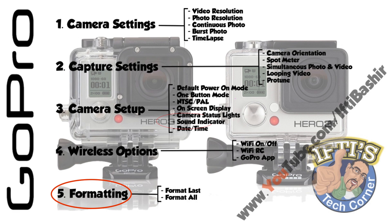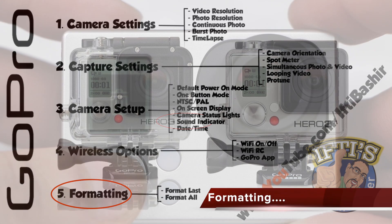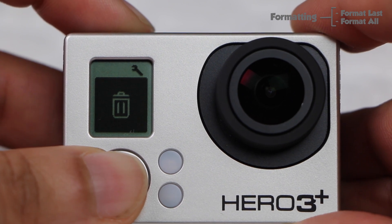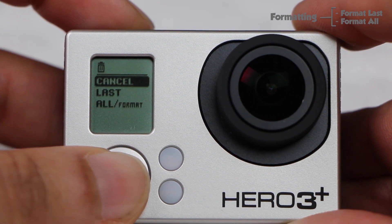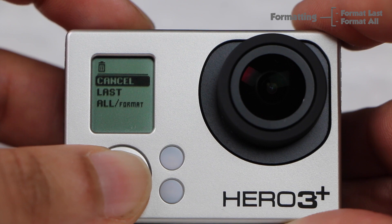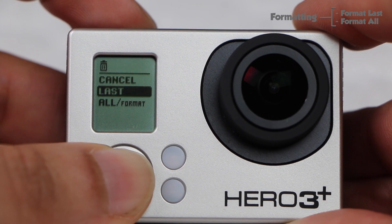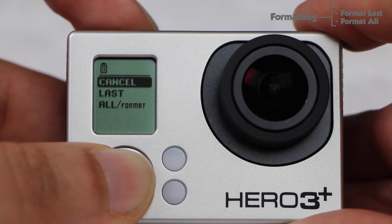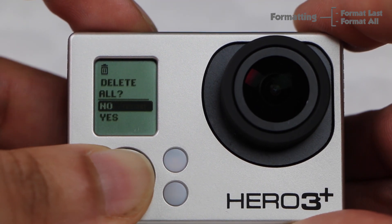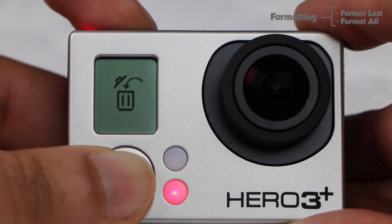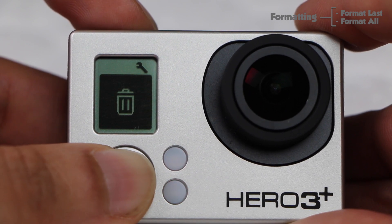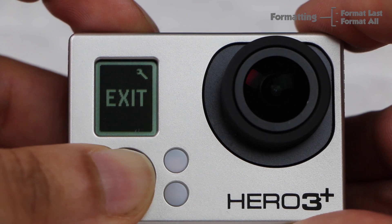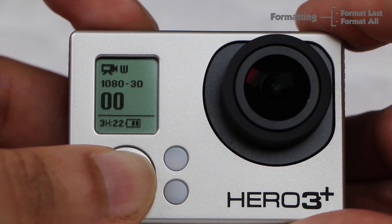The very last camera option we have is formatting. This setting allows you to format your memory card — bear in mind this will delete anything currently stored on the card. But it's a good idea to format your memory card before you start shooting video in order to minimise any memory card related errors. As a general rule, when you insert a new card for the first time, or once you've transferred the video from your card into your computer, insert the card back into your camera and reformat it before you start shooting again. It's more reliable formatting in the camera itself rather than formatting via your computer.